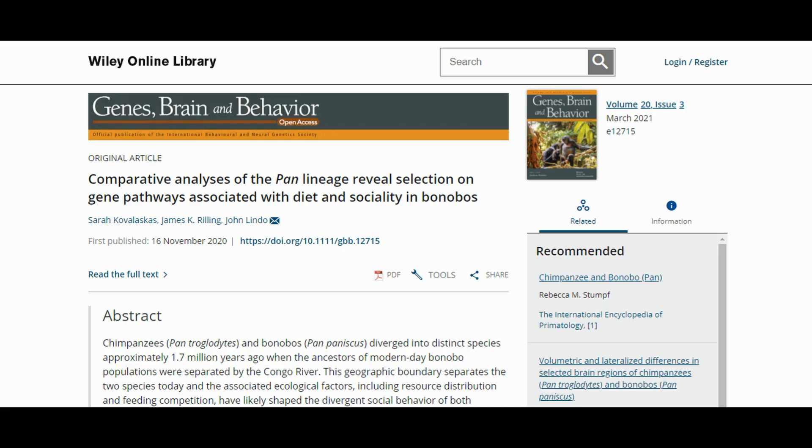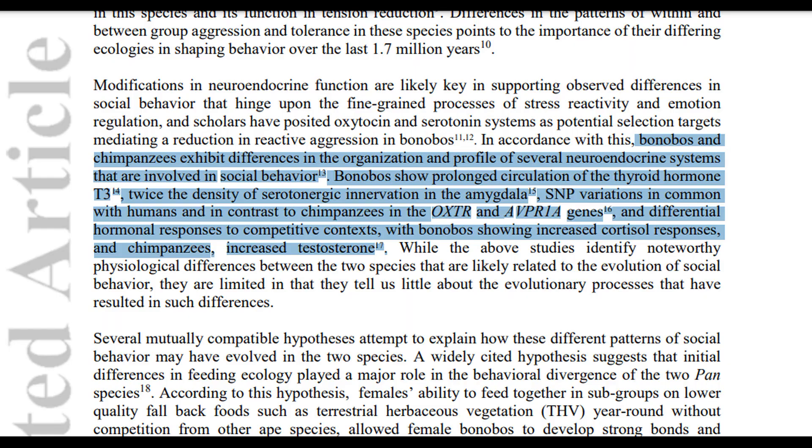According to a 2020 paper, bonobos and chimpanzees exhibit differences in the organization and profile of several neuroendocrine systems that are involved in social behavior. Bonobos show prolonged circulation of the thyroid hormone T3, twice the density of serotonergic innervation in the amygdala, SNP variations in common with humans, and in contrast to chimpanzees in the OXTR and AVPR1A genes, and differential hormonal responses to competitive contexts, with bonobos showing increased cortisol responses, and chimpanzees increased testosterone.